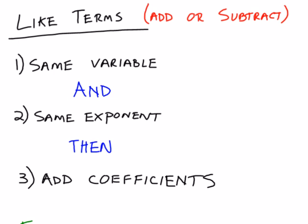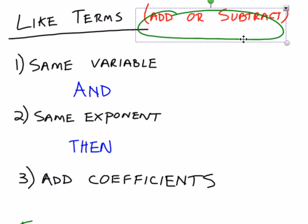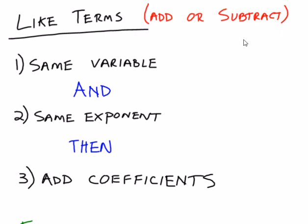This module does involve some reviews. So one thing I want to review are the rules for combining like terms. Like terms are a concept that only applies when you're adding and subtracting. And when you're adding and subtracting, in order for two terms to be like, they have to have the same variable and have the same exponent. And if that is true, be sure to only add the coefficients, only add the numbers in front.